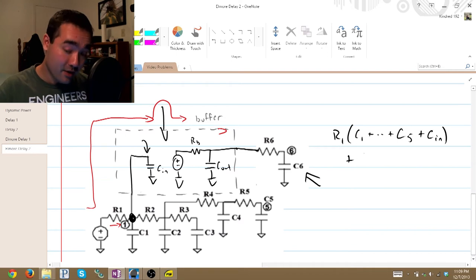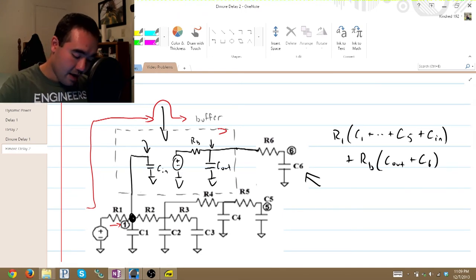So plus RB times Cout, because it's everything downstream from that node, plus C6. And that's all we have there.